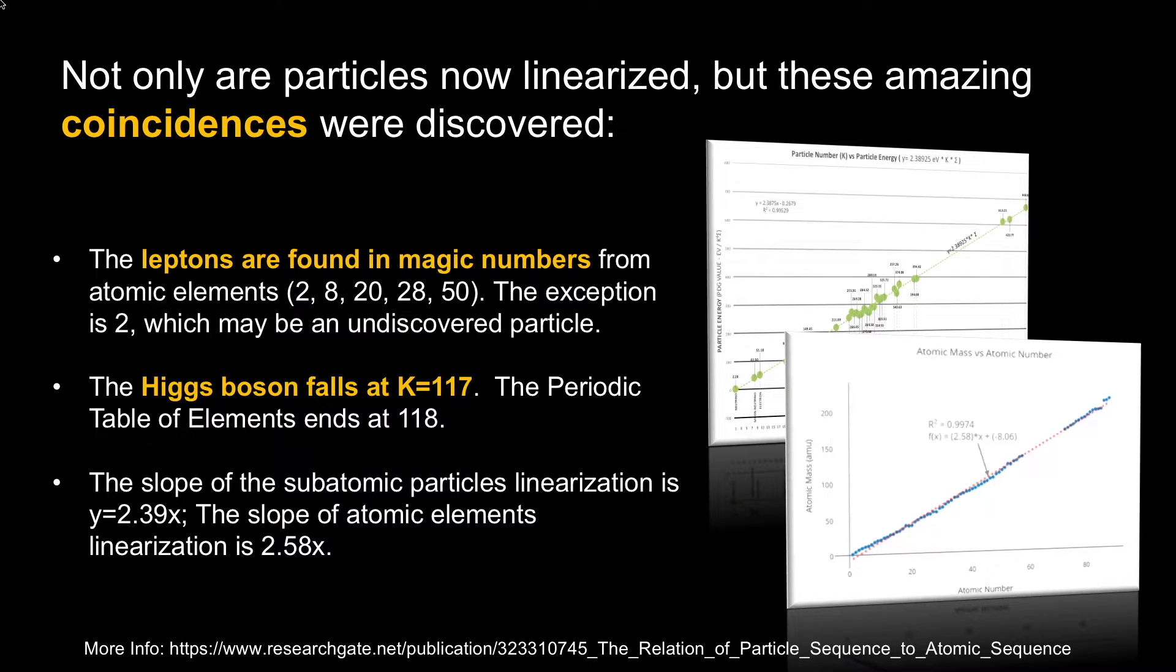Not only was it a coincidence that they're linearized, but here's the similarities between atomic elements and subatomic particles. The leptons, the electron family and neutrino family, were found at particle counts of 8, 20, 28, 50. Those are magic numbers found in atomic elements, and leptons are more stable particles. Magic numbers appear in atomic elements because that's the more stable configuration of atoms.